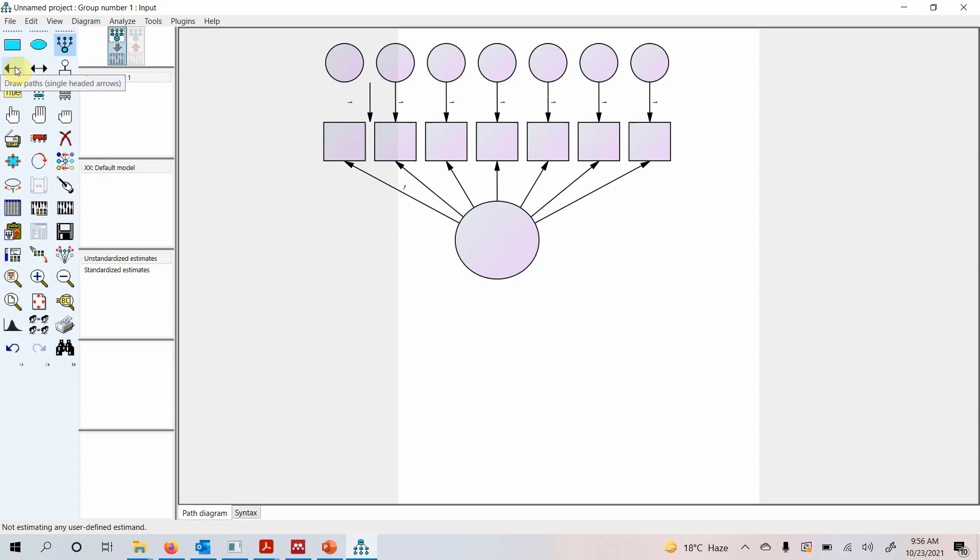This is your path—single-headed arrow, double-headed arrow, error term—if you want to draw separately. In order to select these indicators or latent variables, you can use these symbols. In order to move these objects, you can use this move object or truck icon. Select it and you can move it.